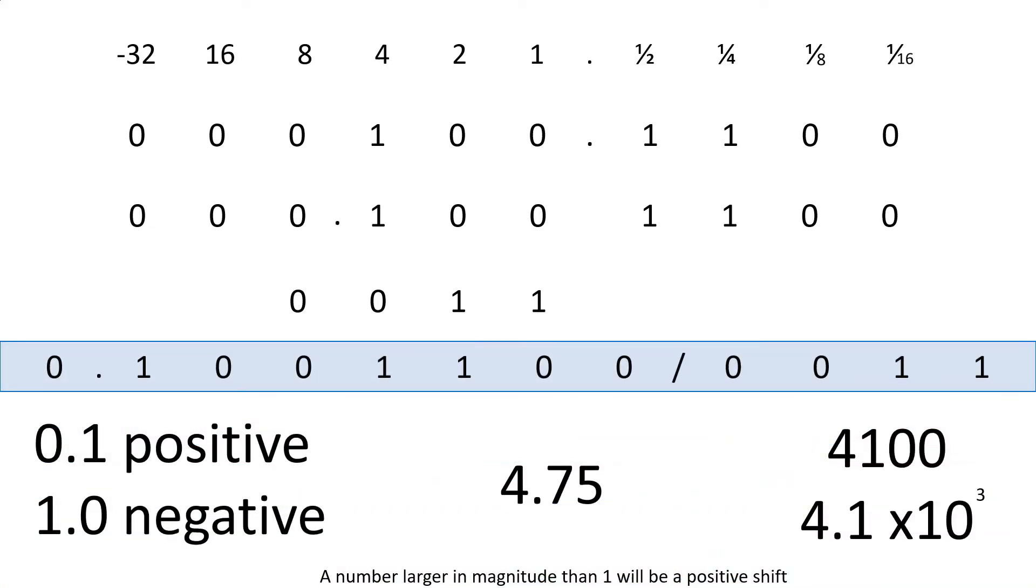I haven't explained the terminology behind floating point. The number on the left, that is called the mantissa, and the 4 digits on the right is called the exponent. Now usually you'll be given a certain number of digits. In this case I've got 8 digits on the left, which is my mantissa, and 4 digits on the right, which is my exponent.